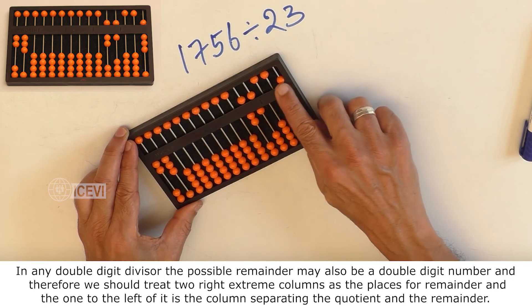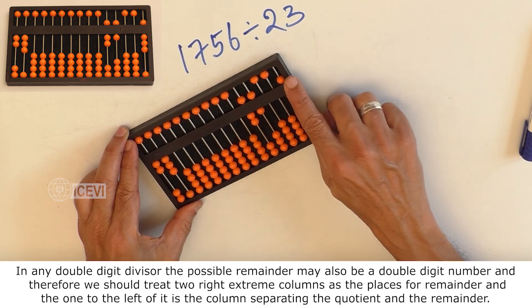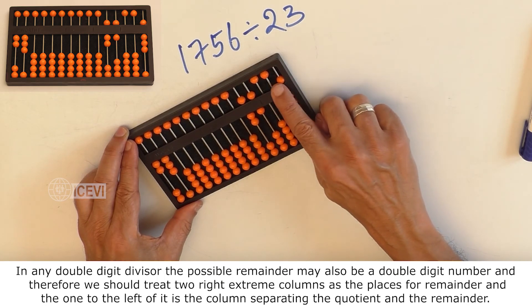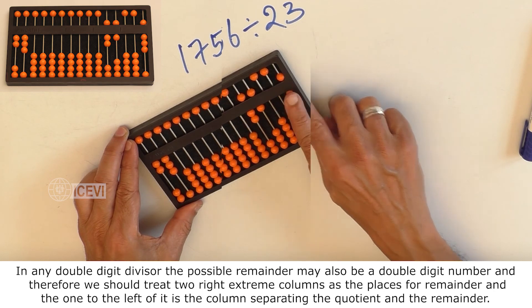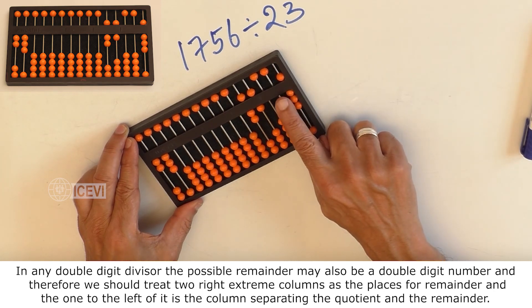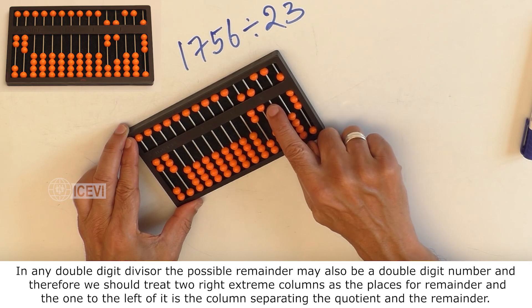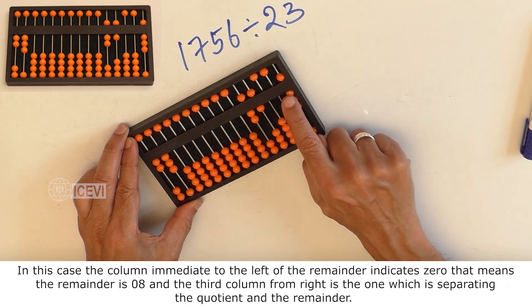In any double digit divisor, the possible remainder may also be a double digit number and therefore we should treat the two right extreme columns as the places for the remainder and the one to the left of it is the column separating the quotient and the remainder.